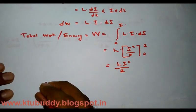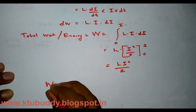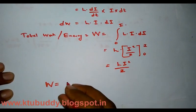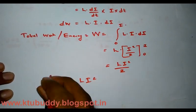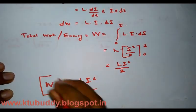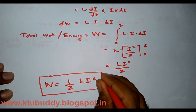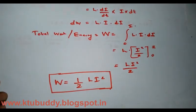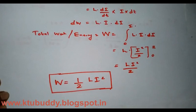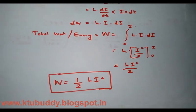That simplifies to L·i²/2. Therefore the work done or energy stored in a magnetic field is W = ½LI². This is the expression for energy stored in a magnetic circuit.